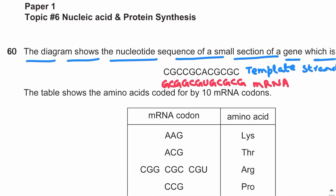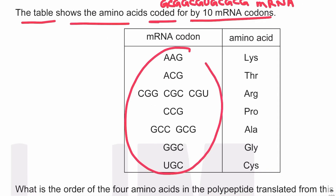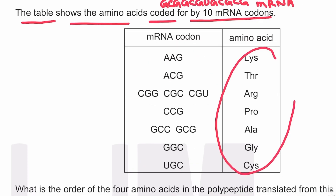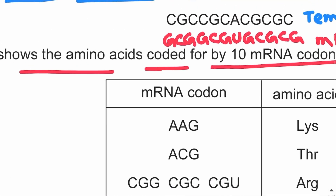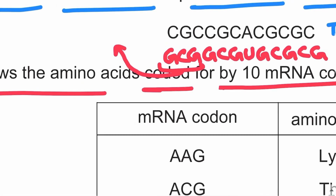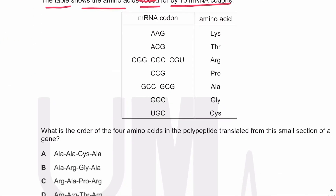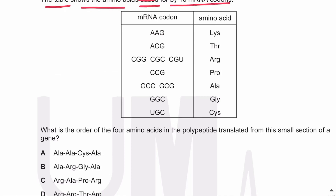The table shows the amino acids coded for by 10 mRNA codons. These are the mRNA codons coding for their respective amino acids. A codon is a group of three bases on messenger RNA — for example, GCG is a codon. The question asks: what is the order of the four amino acids in the polypeptide translated from this small section of the gene?